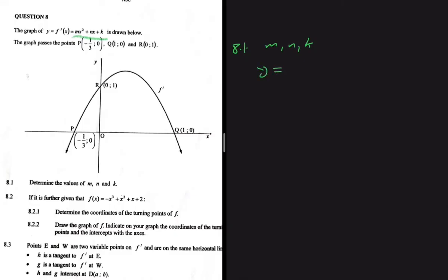The graph of y equals f prime of x equals mx squared plus nx plus k is drawn below. The graph passes through points P, Q, and R, as you can see on the sketch. Question 8.1 asks us to determine the values of m, n, and k. We are given three variables and three points, so we can set up three equations to find the answer.